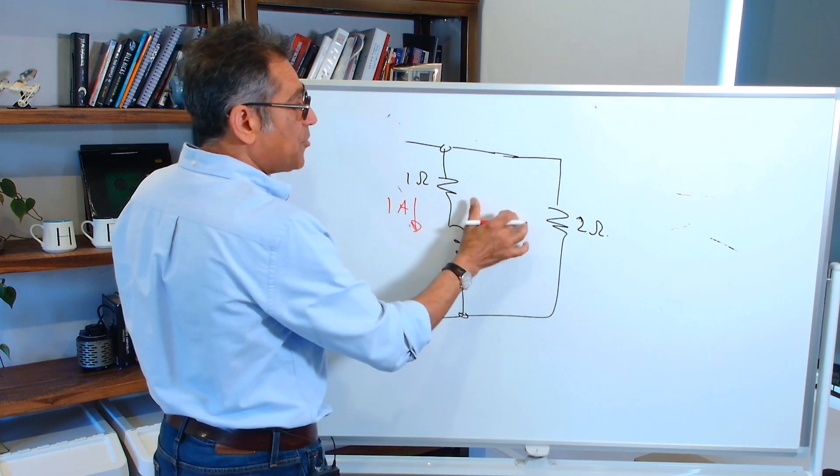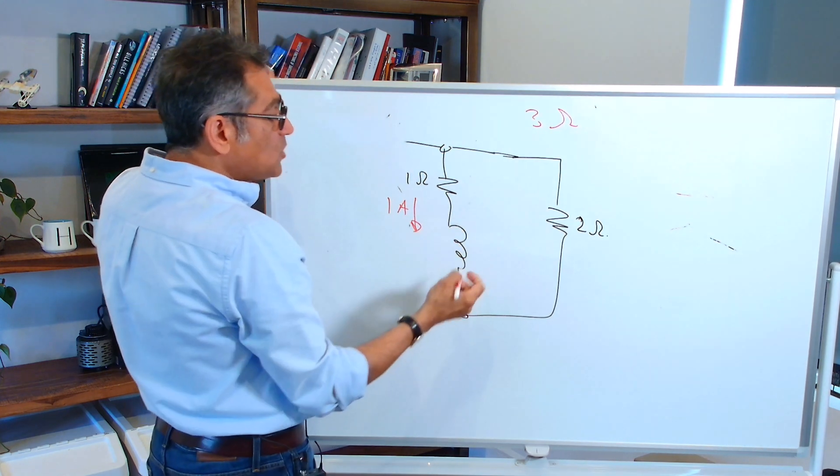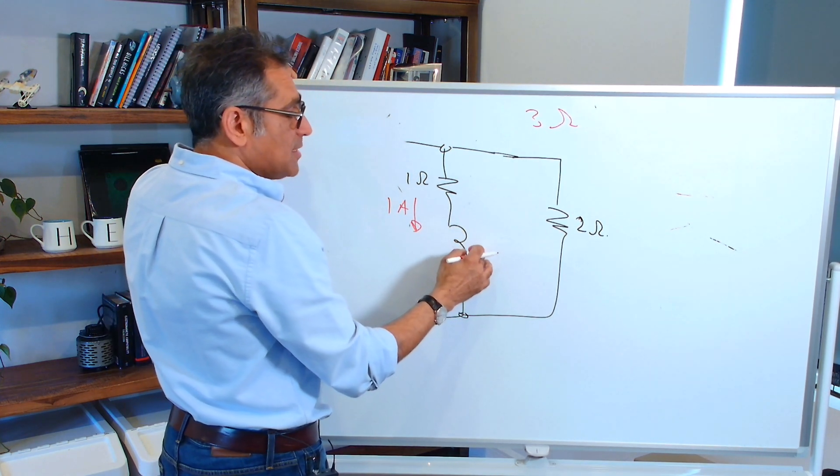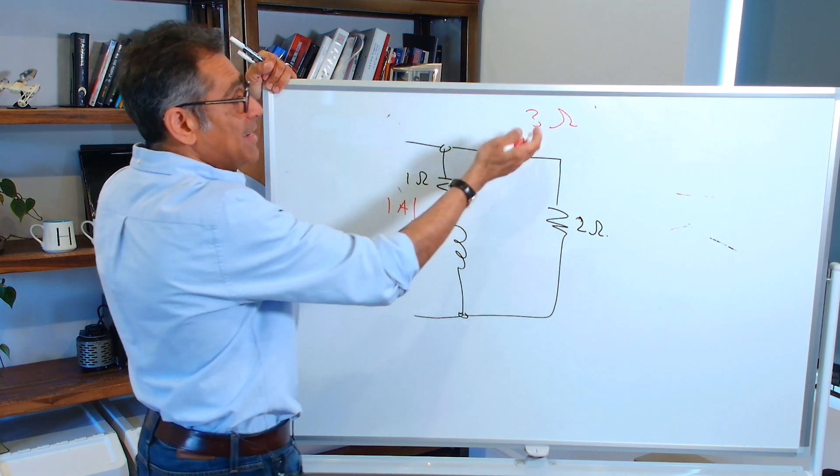You have got three ohms, two ohms plus one. So what would be the back EMF across this inductor in order to make sure one amp continues to flow? Well, it's three ohms. You need one amp. Ohm's law says you need three volts.